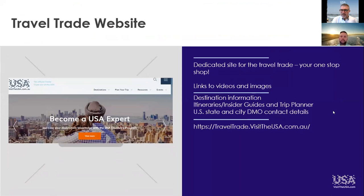Our travel trade site has been dedicated and created for you all. You'll find information on all the cities, states, the District of Columbia, and the territories. Our insider guides are on there, our trip planner, and contact details for every single city and state's tourist boards or DMOs. If you've got a question or need a brochure or map for a city or state not represented in New Zealand or Australia, just click on the name and it'll direct you to that city or state's travel trade site where you'll find all the information and contact details you need.